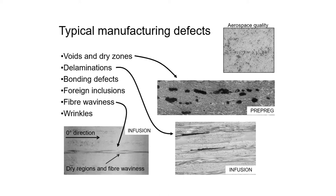Although the manufacturing methods for wind turbine blades have shown many interesting results from extensive research, typical manufacturing defects remain and need to be removed. These include voids and dry zones in the material, delaminations, bonding defects, foreign intrusions, fiber waviness and wrinkles. These material defects must be removed to obtain a final product with desired qualities.